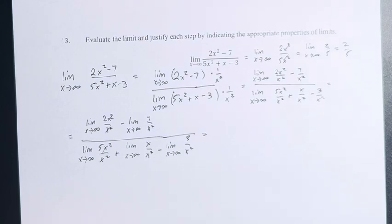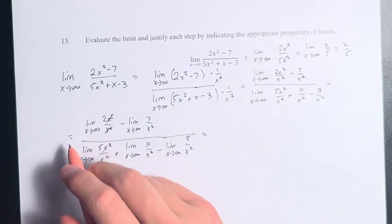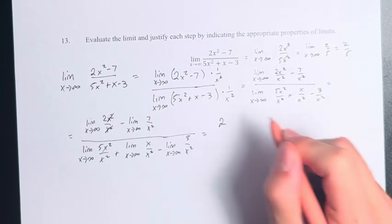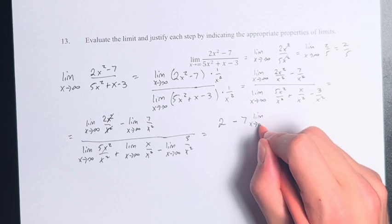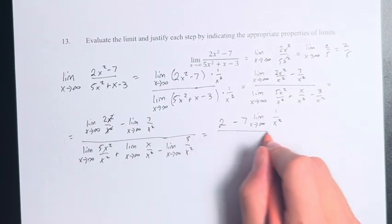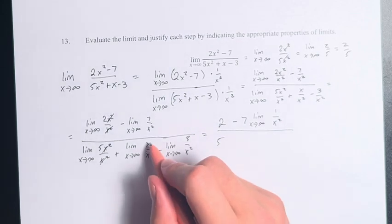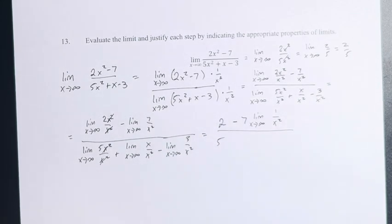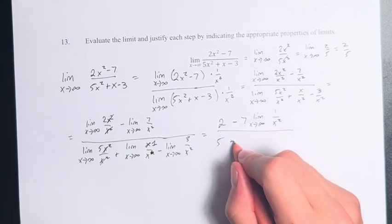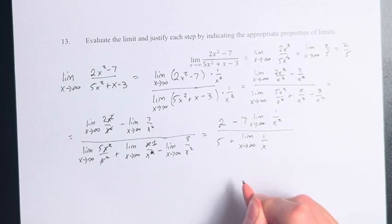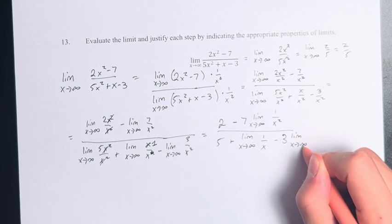So we have the limit as x approaches infinity of 2x squared over x squared, minus the limit as x approaches infinity of 7 over x squared, divided by the limit as x approaches infinity of 5x squared over x squared, plus the limit as x approaches infinity of x over x squared, minus the limit as x approaches infinity of 3 over x squared. The x squareds cancel, giving us the limit of 2, which is just 2, minus 7 times the limit as x approaches infinity of 1 over x squared. Similarly, we get 5, plus the limit as x approaches infinity of 1 over x, minus 3 times the limit as x approaches infinity of 1 over x squared.